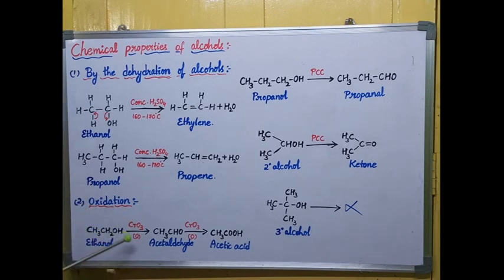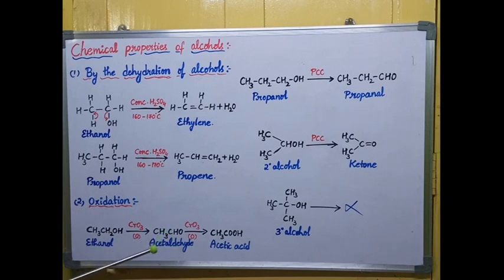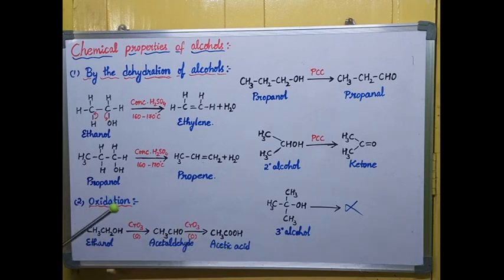Taking ethanol with chromium trioxide as the oxidizing agent, oxidation takes place. In the first reaction, ethanol converts into acetaldehyde — hydrogens are removed, and removal of hydrogens is oxidation. Adding one more equivalent of chromium trioxide causes one more oxygen addition: CHO converts into COOH, so acetaldehyde converts into acetic acid. Therefore, ethanol upon oxidation produces acetic acid, meaning primary alcohols produce acids upon oxidation.